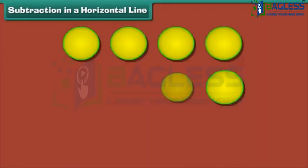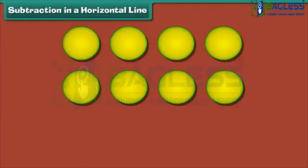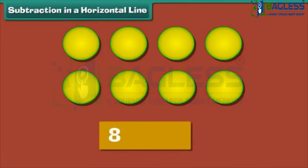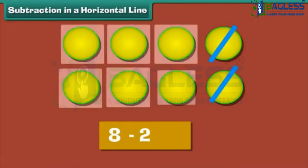To subtract two from eight, we place eight dots. Strike off two dots. Six dots remain. Therefore, six is the answer.